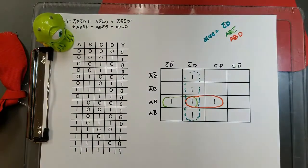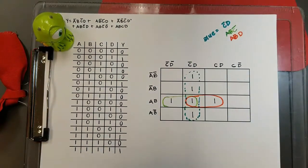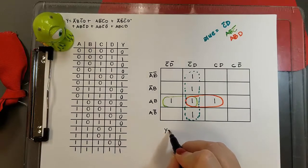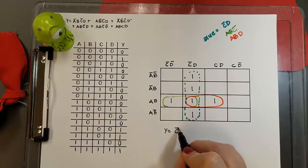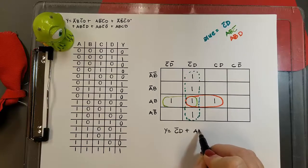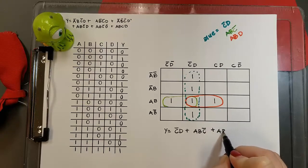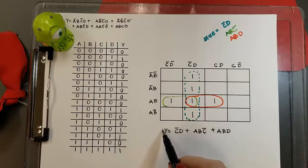Now I can write the final form all together to have the simplified equation. So our simplified equation is Y equals not C D, or A and B and not C, or A and B and D. And that's our final answer.